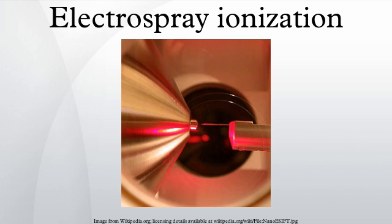Extractive electrospray ionization is a spray-type ambient ionization method that uses two merged sprays, one of which is generated by electrospray. Laser-based electrospray ambient ionization is a two-step process in which a pulsed laser is used to desorb or ablate material from a sample, and the plume of material interacts with an electrospray to create ions. The sample material is deposited on a target near the electrospray; the laser desorbs or ablates material from the sample, which is ejected into the electrospray to produce highly charged ions. Examples include electrospray laser desorption ionization, matrix-assisted laser desorption electrospray ionization, and laser ablation electrospray ionization.